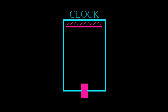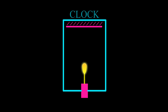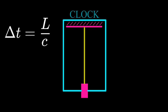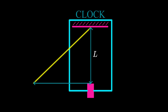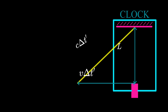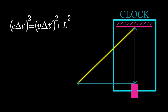Imagine a clock where you have a bouncing photon. If you are in the rest frame of this device, then the time interval for one bounce is just the length divided by the speed of light c. But if we look at this device in relative motion, we see a photon trajectory like this. According to the second postulate we have to measure the same speed for the photon, but now the path it travels is longer. So we can use the Pythagorean theorem and get this expression.